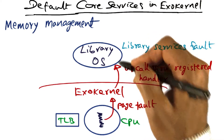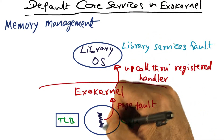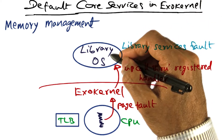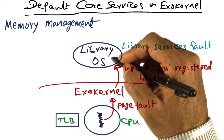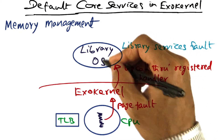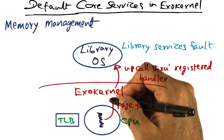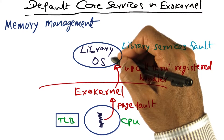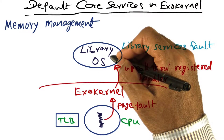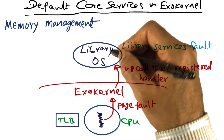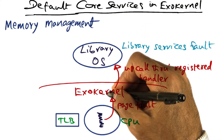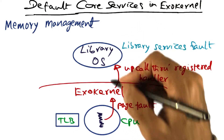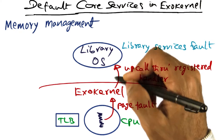Because the library operating system knows about processes — whereas exokernel has no knowledge of that — it services the page fault. Servicing the page fault may involve requesting exokernel for a page frame to host the specific page that is missing. If it does that, the library asks exokernel for a page frame, and exokernel creates a binding for that page frame and returns an encrypted key for it.